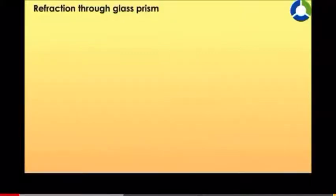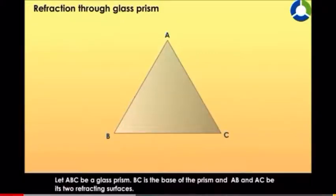Refraction through glass prism. Let ABC be a glass prism. BC is the base of the prism and AB and AC be its two refracting surfaces.